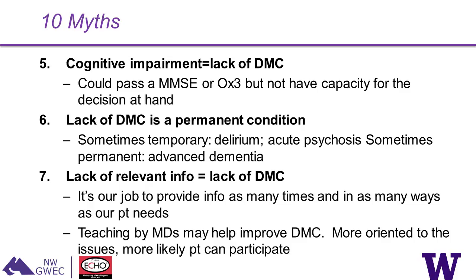Myth six: lack of capacity is a permanent condition. Everyone knows it's not, but we get into ethically complex situations when it's unclear whether incapacity is temporary or permanent. Delirium or acute psychosis would be temporary, while advanced dementia is permanent — and in the latter case a permanent, long-term surrogate is needed.